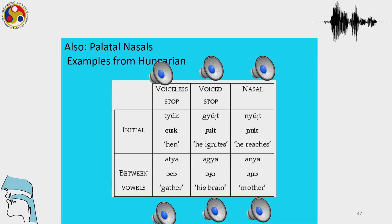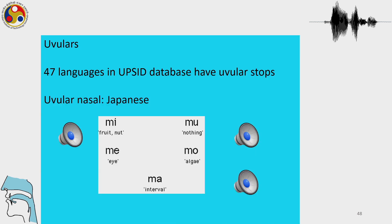These 3 occur between vowels and the nasal has a glide before the production of the vowel. A lot of languages have uvulars and we will play the uvular nasals in Japanese before we wrap up today's session.